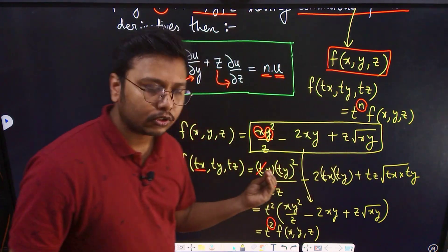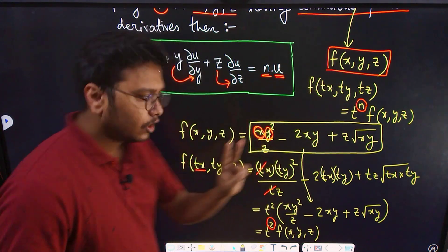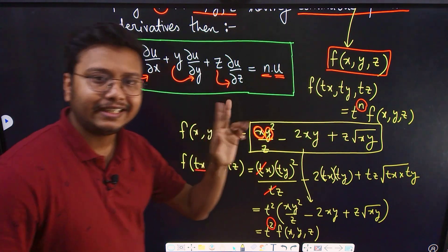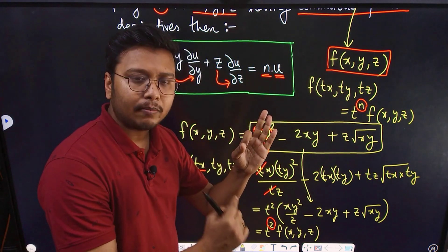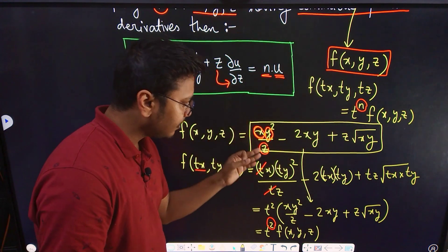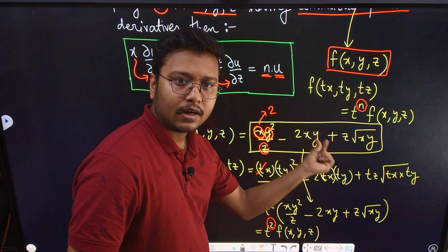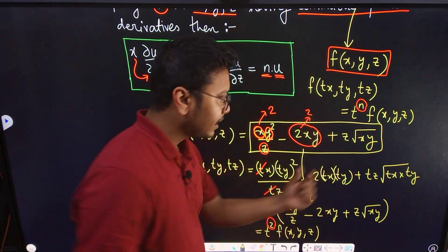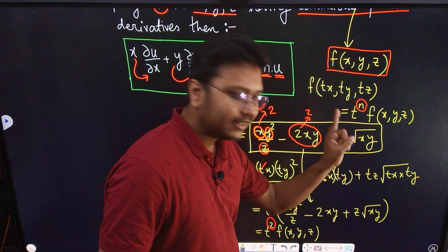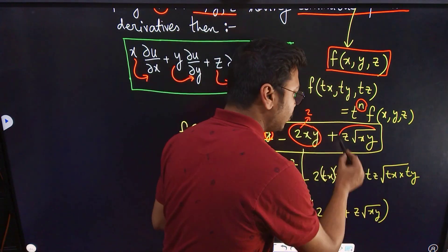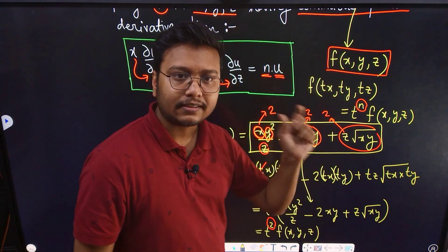A quick way to check: look at the degree of each term. For xy²/z: degree 1 plus 2 minus 1 equals 2. For 2xy: degree 1 plus 1 equals 2. For z√(xy): degree 1 plus half plus half equals 2. If all terms have the same degree, the function is homogeneous and that degree is the degree of the function.